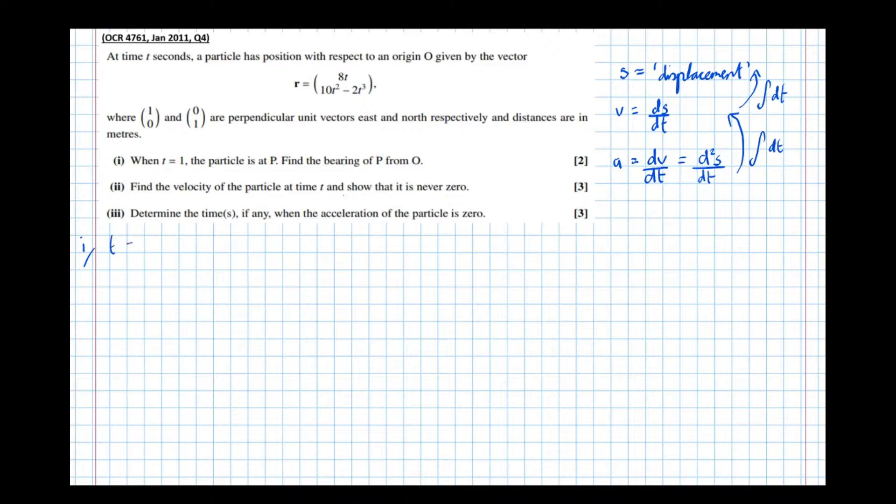Let t equal 1, which means the displacement s equals (8×1, 10×1² - 2×1³) = (8, 8). Since we travel the same distance east as north, the bearing is 45 degrees, but let's prove it using algebra.